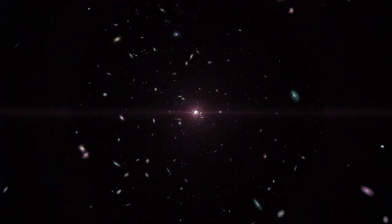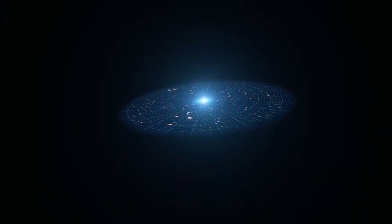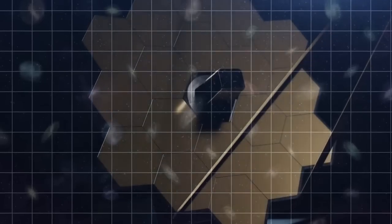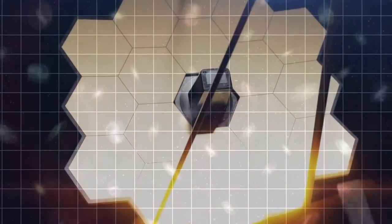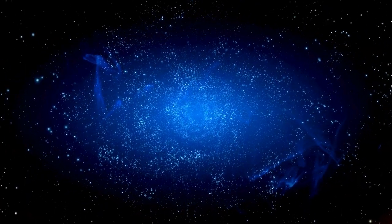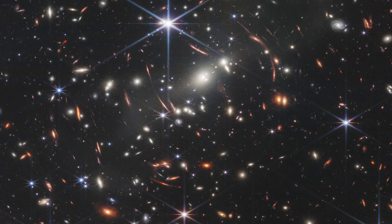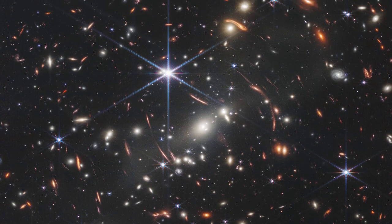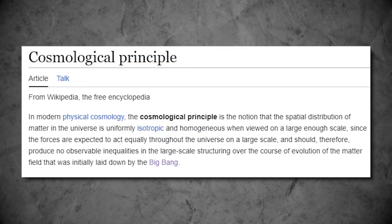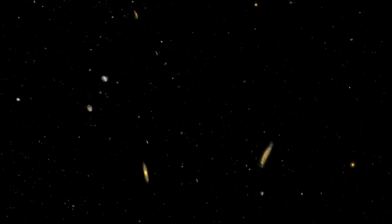Another startling finding is that the universe's expansion isn't uniform across all regions. Previously, the prevailing notion was that the universe expands uniformly in all directions. However, recent observations from the Webb Telescope indicate otherwise. Astronomers have recently verified that the rate of expansion varies depending on the direction we observe. This poses a significant challenge because if the universe expands at differing rates in distinct regions, it contradicts a fundamental tenet of modern cosmology, which asserts isotropy, the idea that the universe appears the same in all directions.